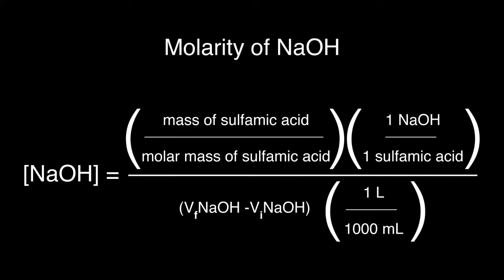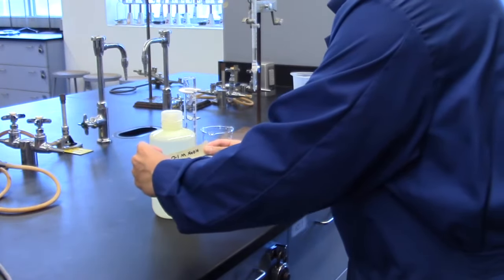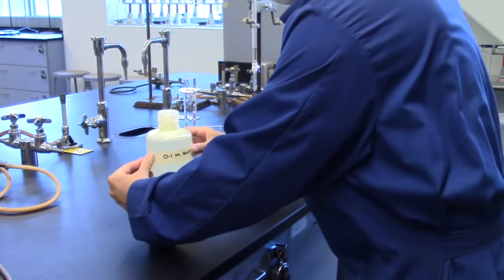Calculate the molarity of the sodium hydroxide solution from each trial. Then calculate the average of the three determinations. Use this average value in your subsequent calculations using the sodium hydroxide solution.